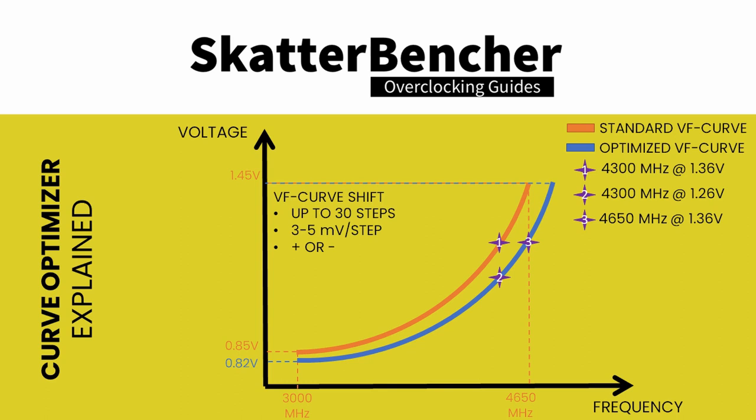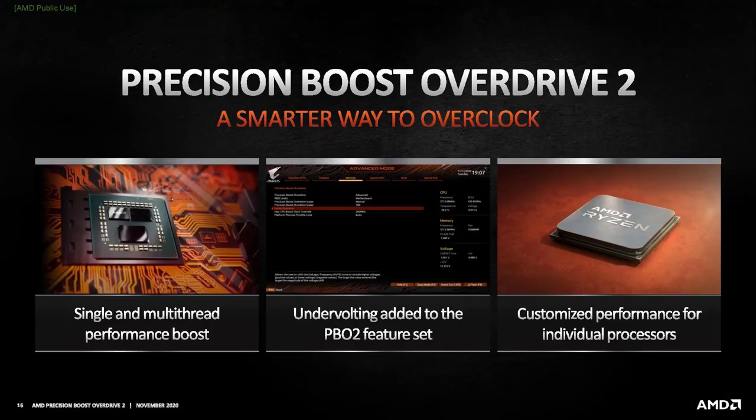Two key things happen when you adjust the voltage-frequency curve with a negative offset. First, you effectively tell the CPU that for a given frequency it needs less voltage — and as a consequence, at a given voltage it can apply a higher frequency. So when the Precision Boost algorithm determines there is sufficient power and thermal headroom to use 1.35V, with Curve Optimizer it will target a higher frequency. Second, because less voltage is used at a given frequency, the CPU temperature will be lower, and that extra thermal headroom will encourage the PBO algorithm to target higher voltages and frequencies.